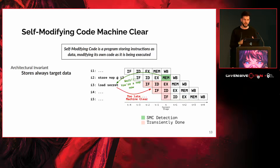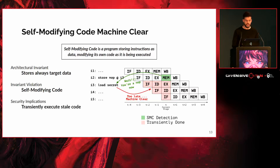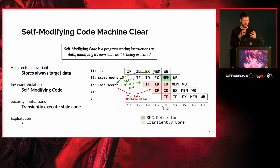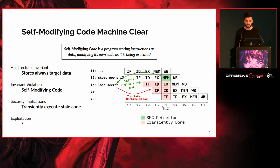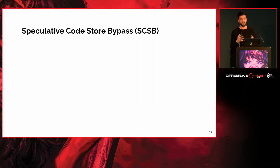The architectural invariant here is that store instructions always target data addresses. This invariant is violated in the case of self-modifying code, which targets code addresses instead. This violation allows an attacker to transiently execute stale code — in this case, the load secret. The attack primitive built on top of this is called Speculative Code Store Bypass, which allows an attacker to execute stale code using the transient window created by a self-modifying code machine clear.